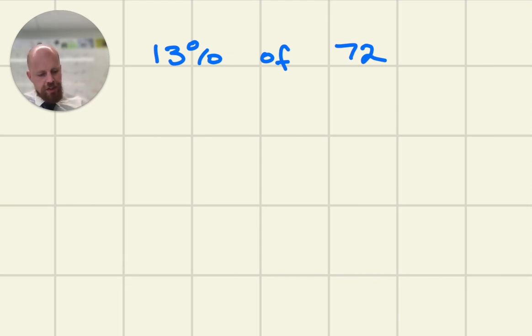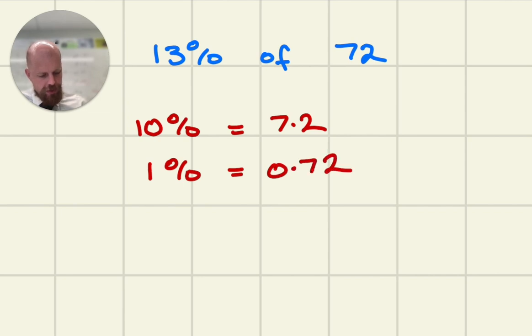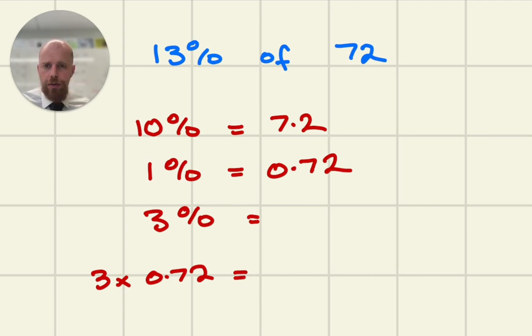What I can do is I can start by finding 10%. 10% of 72 would be 7.2 because I divide by 10. 1% would be 0.72. And then what I can do is I can times that by 3. So if I do 3 times 0.72, I get 2.16. So therefore, 3% is 2.16.